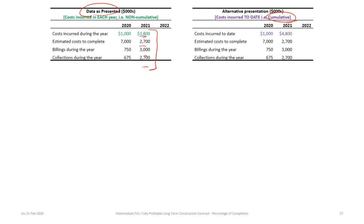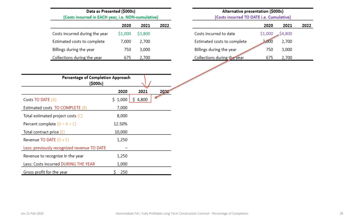We can now work through the 2021 gross profit calculation. We begin with costs to date — not costs incurred in the year — so if data is non-cumulative, you must convert to get total costs to date. The cumulative amount determines the percentage of completion. Costs to date are $4.8 million. Estimated costs to complete in 2021 are $2.7 million — as time progresses, estimates become more accurate.